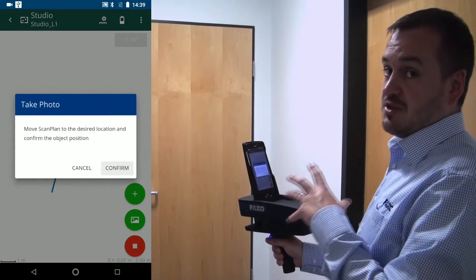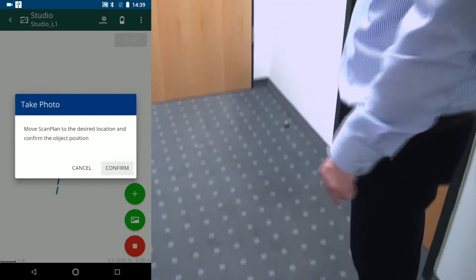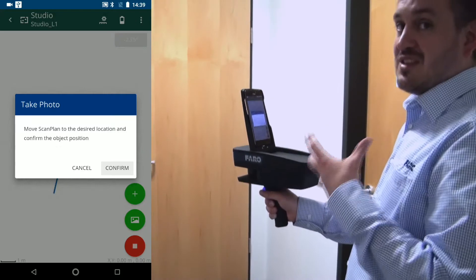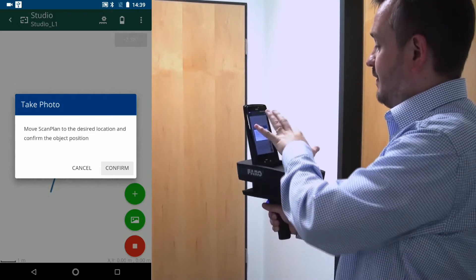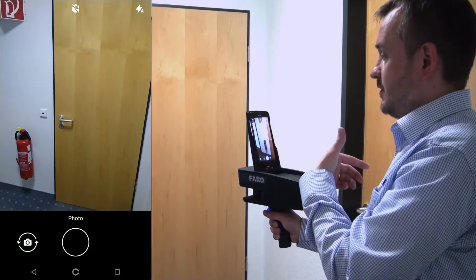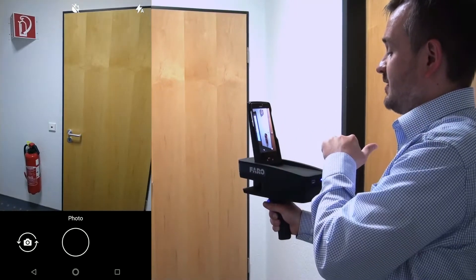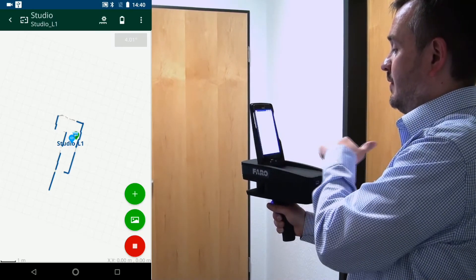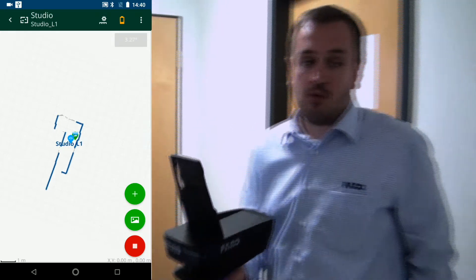It's going to say move scan plan to the position that I want. Notice now that the laser has also come out from the bottom that we talked about earlier. That's to make sure we're in exactly the same position we want. Now from this angle I want to capture the sign and the fire absorption. So I'm going to hit confirm. It's going to bring up the photograph option within the camera. I'm going to just simply press the photograph button, press the tick, and I can see that's been annotated into my diagram. I'm now going to carry on my walk.